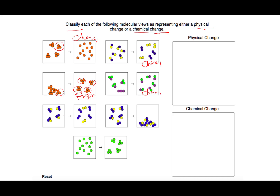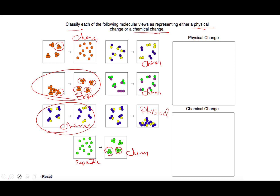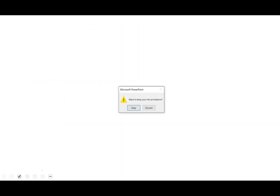Blues and yellows rearranged into different stuff — chemical change. Blues and yellows in little threes far apart and now close together — physical change. And here you've got green dots separated and now clustered together in little groups of three — this is tricky, it's chemical, because they were separate and now they are bonded together. I promise I won't make them that tricky on a quiz. That will do for physical and chemical changes — we will see you again soon. Bye-bye.